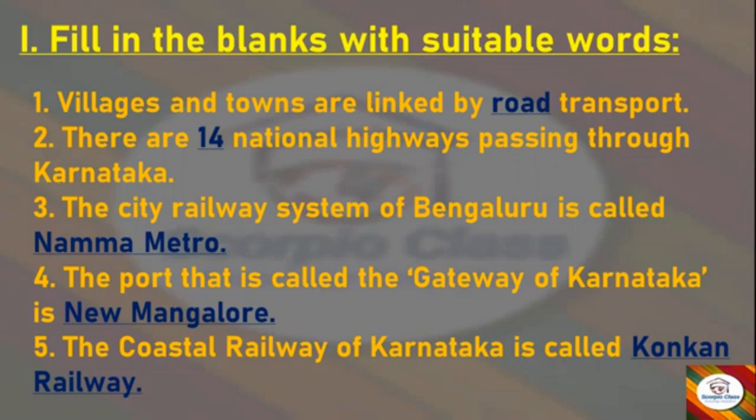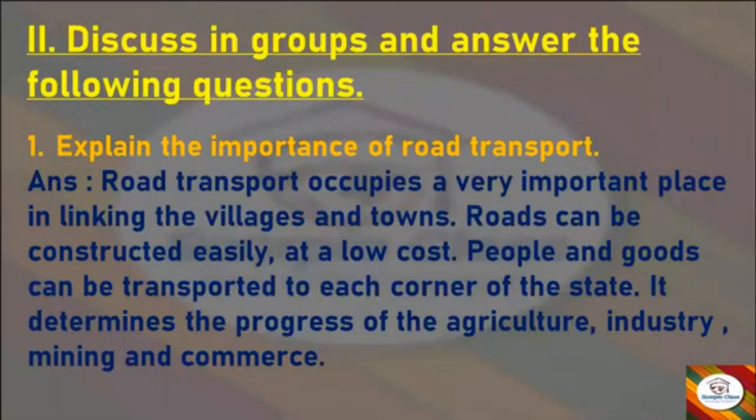Next: The port that is called the gateway of Karnataka is __. Answer: New Mangalore. Next: The coastal railway of Karnataka is called __. Answer: Konkan Railway. These were the fill in the blanks of this chapter. Now let's move to the next section: Answer the Following Questions. First question: Explain the importance of road transport.